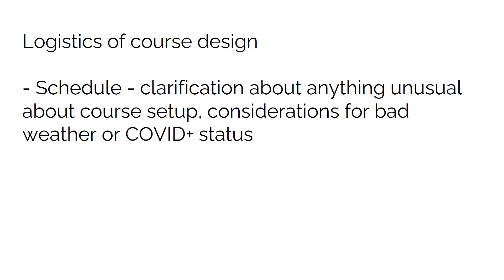Be clear about the schedule and anything unusual about it. Many courses don't meet on a consistent day and time because of constraints like all-day live animal labs, so students need to check the schedule carefully and understand it won't be uniform across the semester. Also explain your contingency plans for bad weather, positive COVID tests, or other disruptions, so students understand well ahead of time what will happen if something changes the schedule.